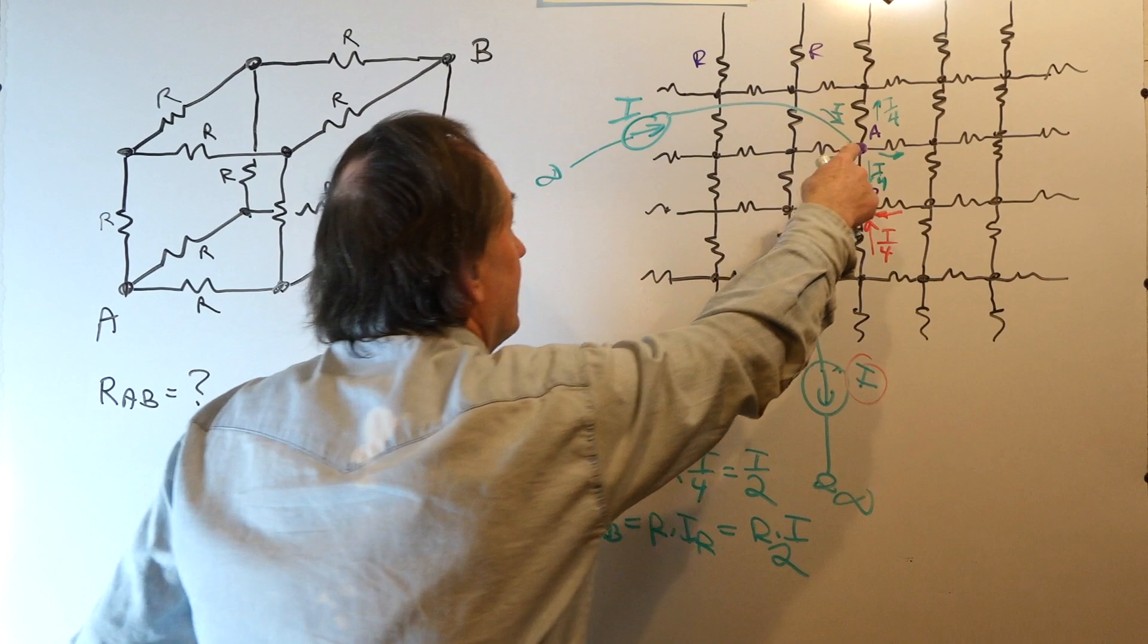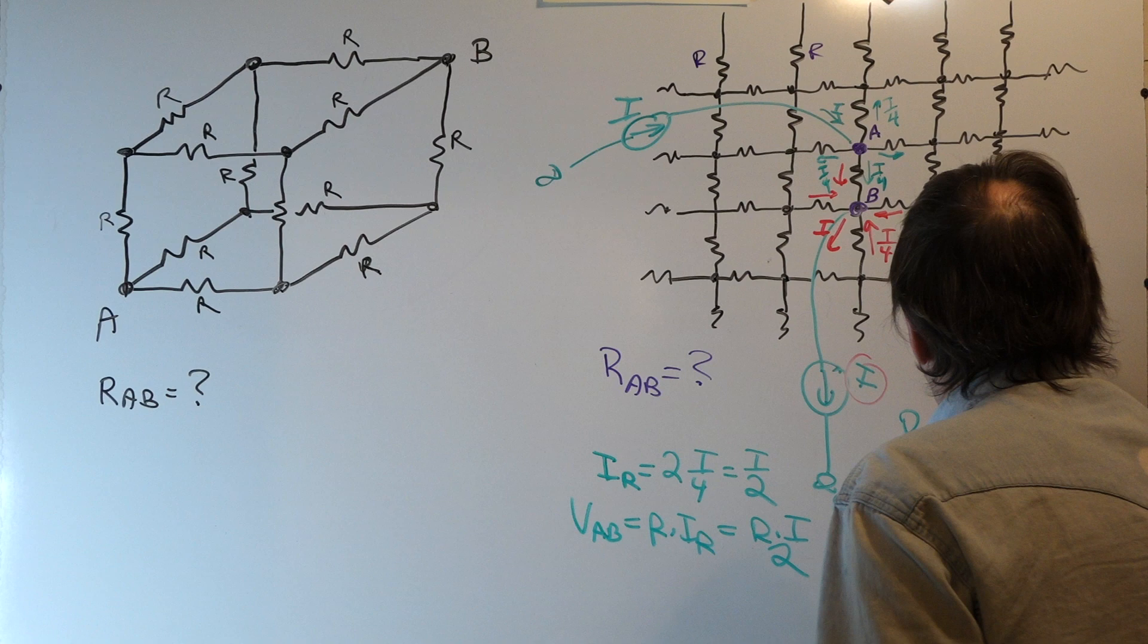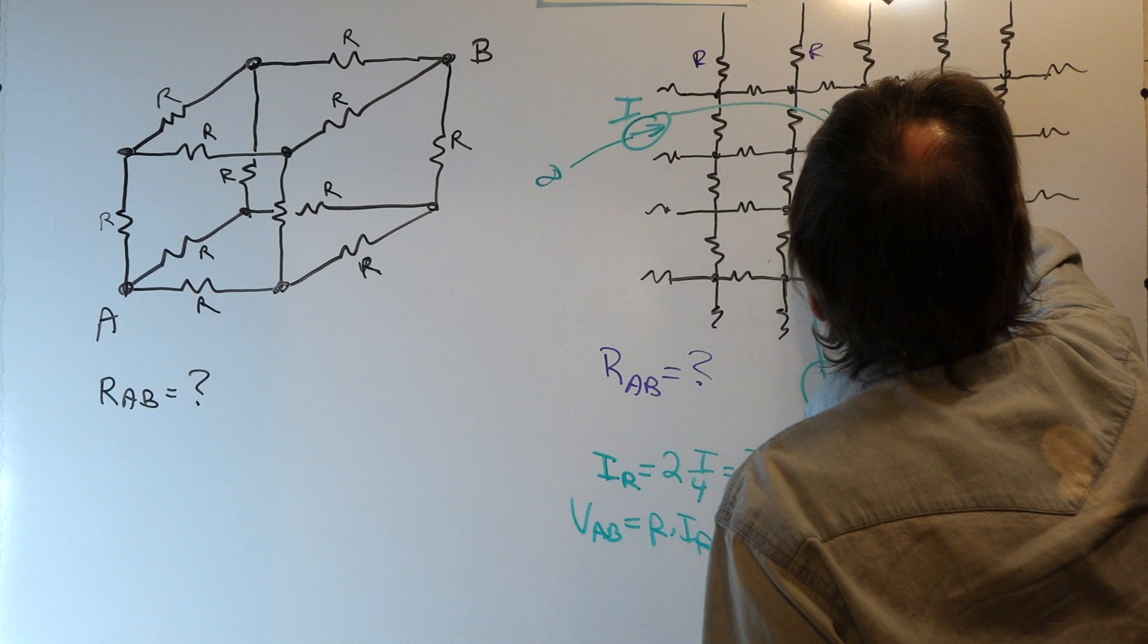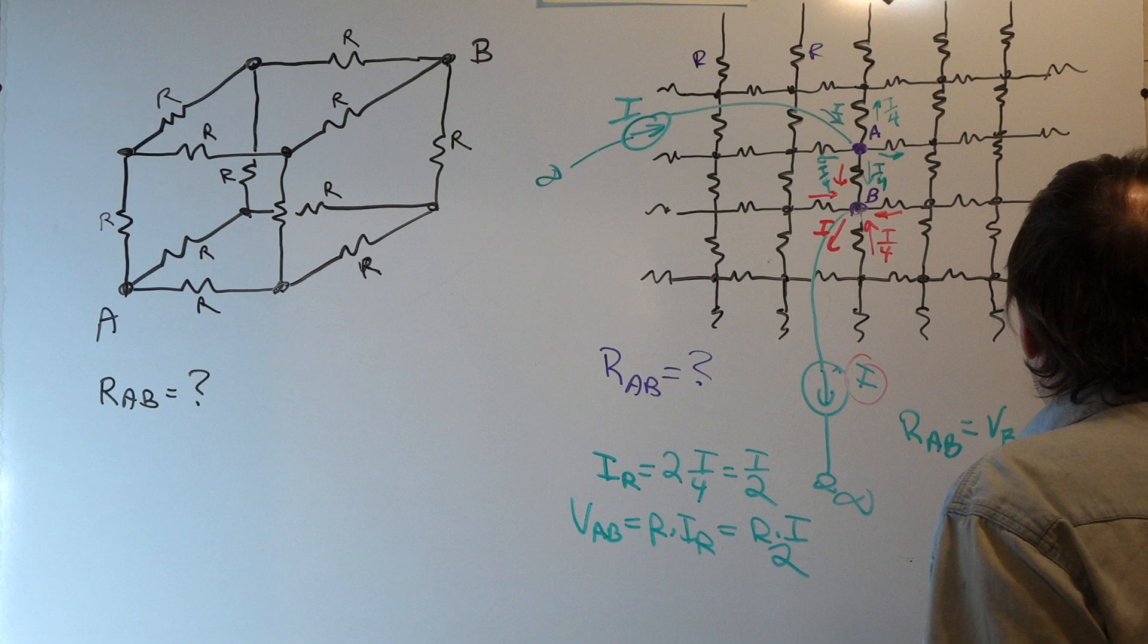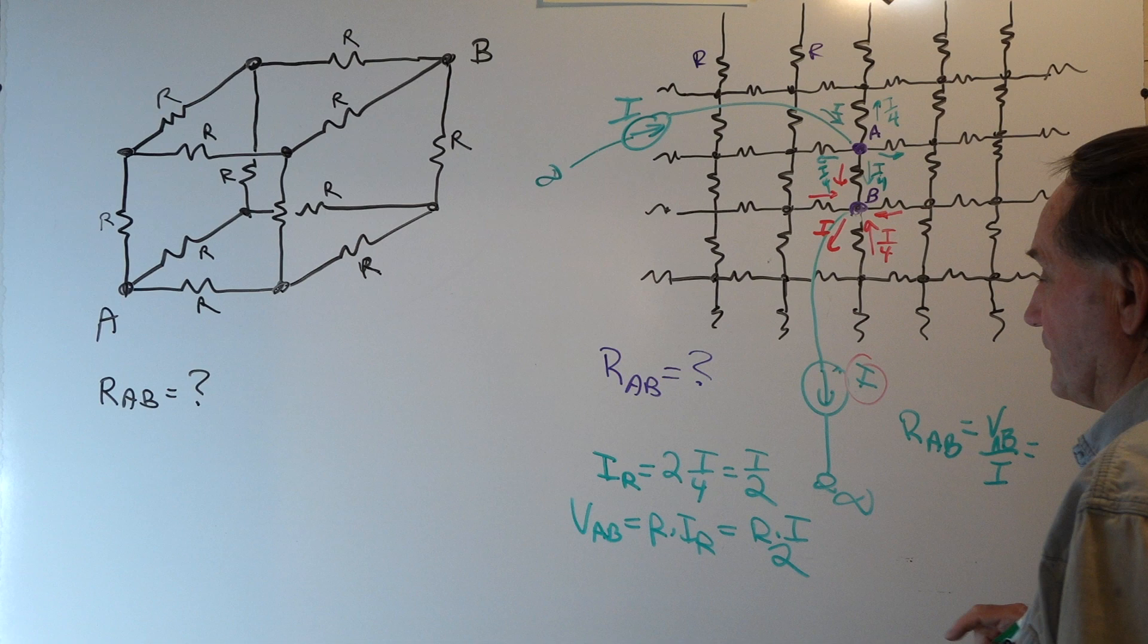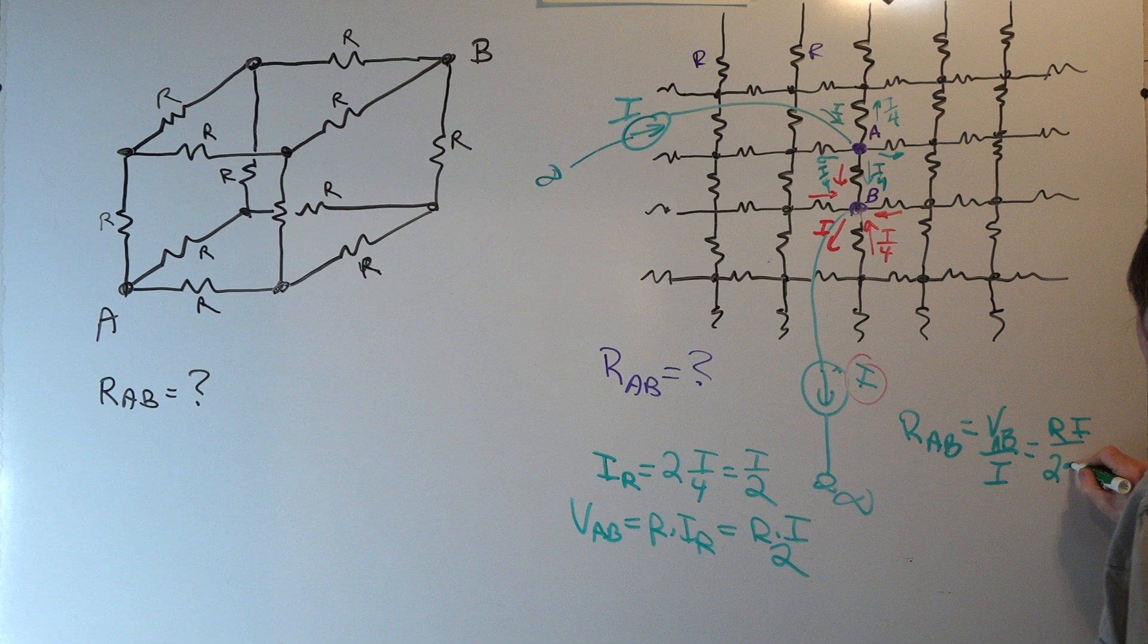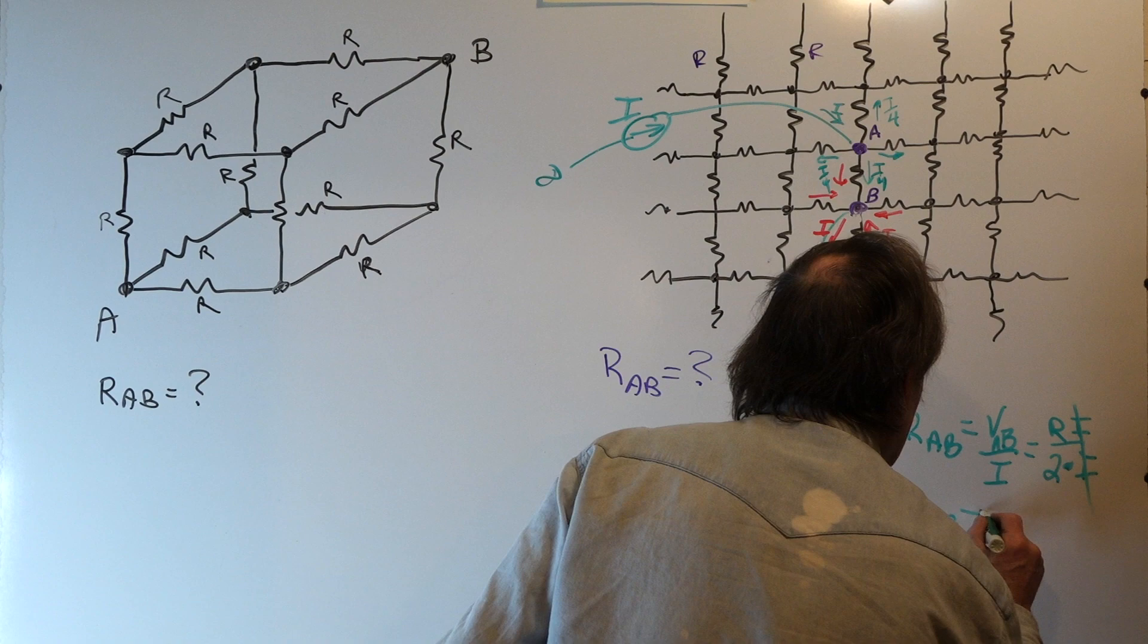What's the total resistance? The total resistance RAB is the voltage that the current source sees between A and B. So it's VAB divided by current I. Well, what's VAB? It's RI over two, and we divide by I. The I's cancel out, so the resistance between A and B is just R over two.